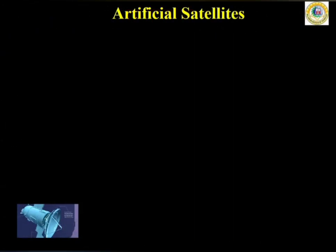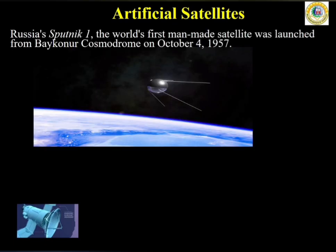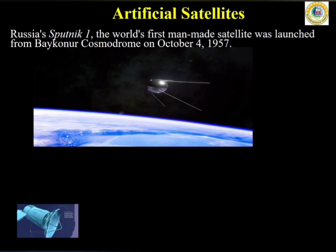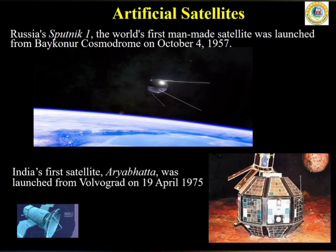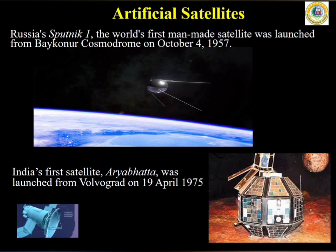Artificial satellites: the world's first man-made satellite is named Sputnik 1 and it is a Russian satellite. This satellite was launched from Baikonur Cosmodrome on October 4, 1957. India's first satellite, Aryabhatta, was launched from Volgograd on 19th April 1975.